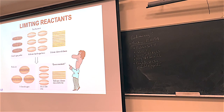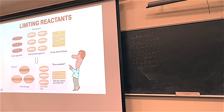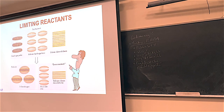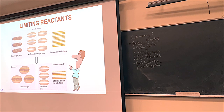Last week in lab, the limiting reactant question came up with zinc and copper chloride solution. At the end of the reaction, the blue copper chloride solution was completely gone—it was the limiting reactant. The zinc was pulled out and re-weighed, making it the excess reactant. All the copper chloride turned into copper metal; the blue solution was totally gone.